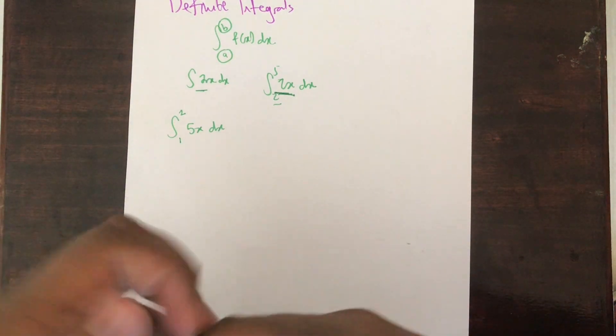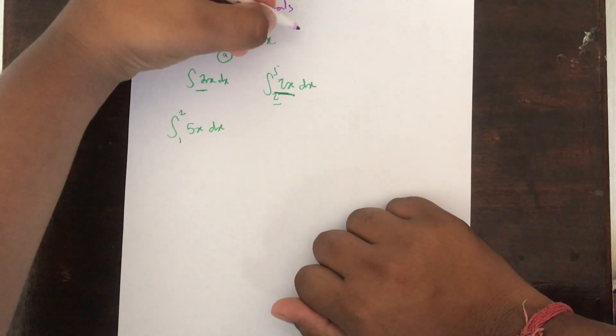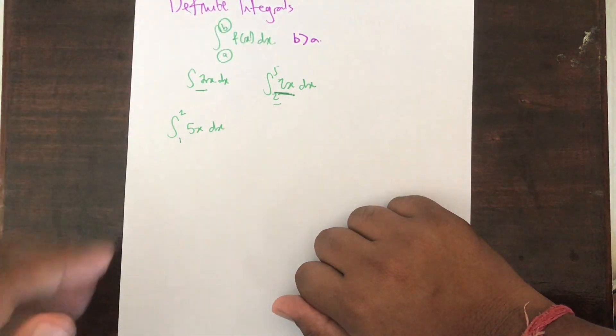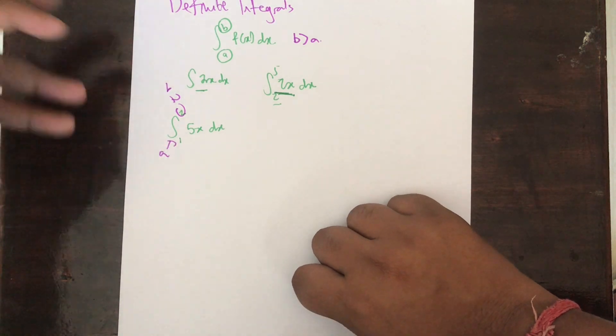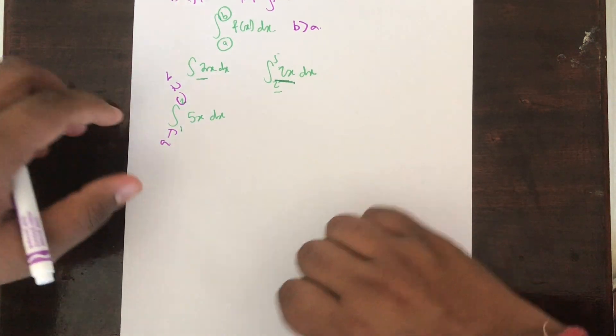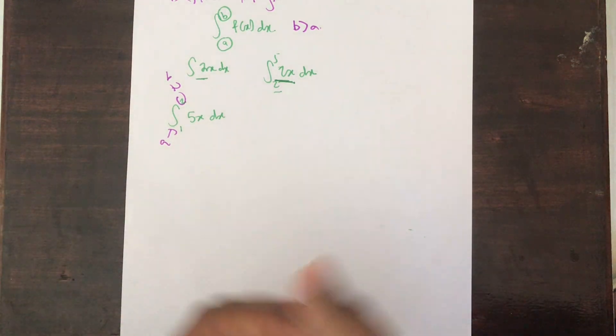Another thing you need to make sure: in a definite integral your b will always be greater than a. Therefore this is your b and this is a. You need to make sure that b will be greater than a. Hence you're able to solve a definite integral.